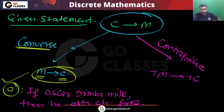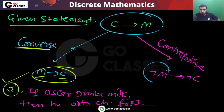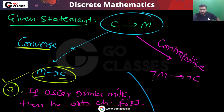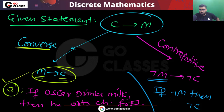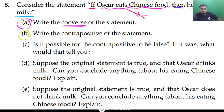What about the contrapositive? For this conditional statement c implies m, the contrapositive will be: negation m implies negation c. That means: if Oscar does not drink milk, then Oscar does not eat Chinese food. This is the answer for part b.